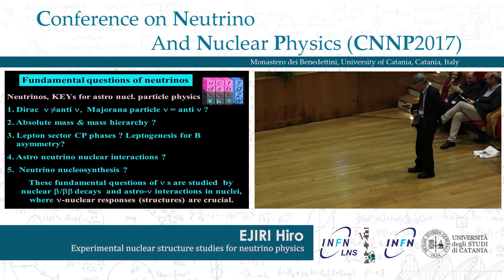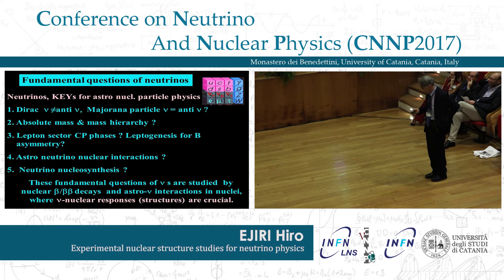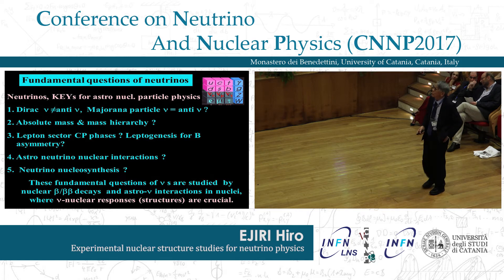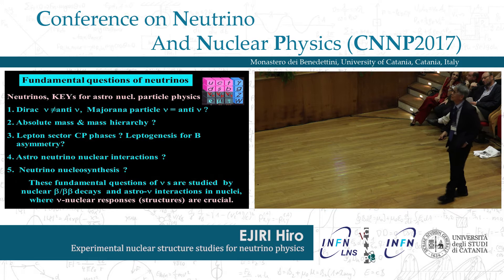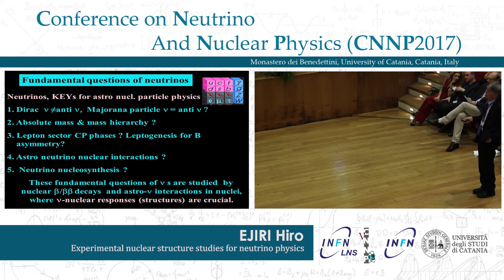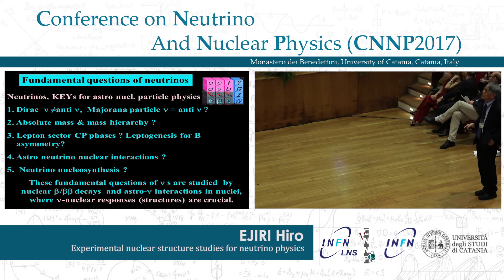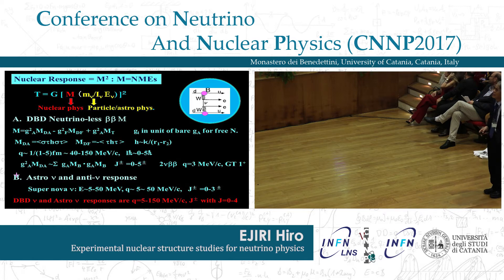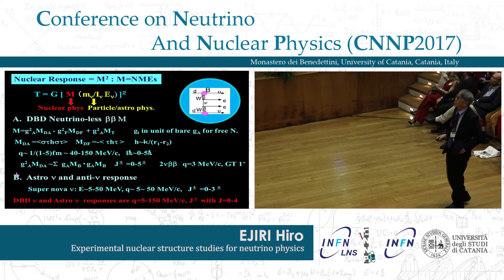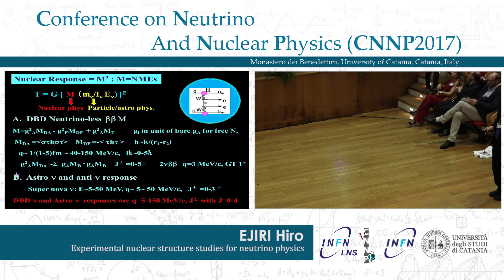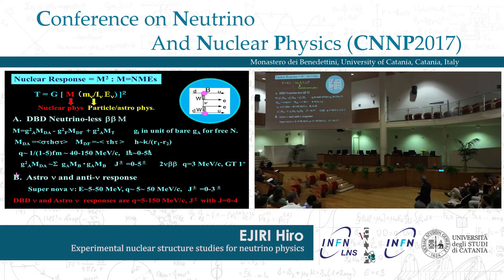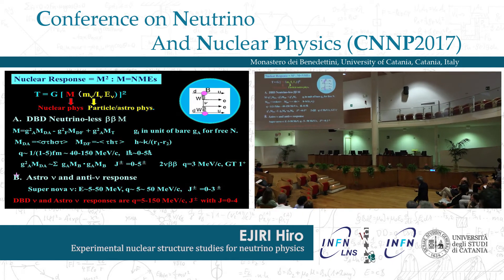The neutrino response is given like this: experimentally we study the transition rate, which involves phase space, nuclear matrix elements, and particle physics properties like mass, or for example supernova neutrino flux and temperature. The nuclear matrix element in that case involves an axial vector part, a vector part, and a tensor part. Importantly, the axial vector or even vector components are renormalized in nuclei because of various nuclear correlations and non-nucleonic degrees of freedom. The matrix element is given by these neutrino potentials, and because of the denominator, we have momentum transfer around a couple of tens to hundreds of MeV.